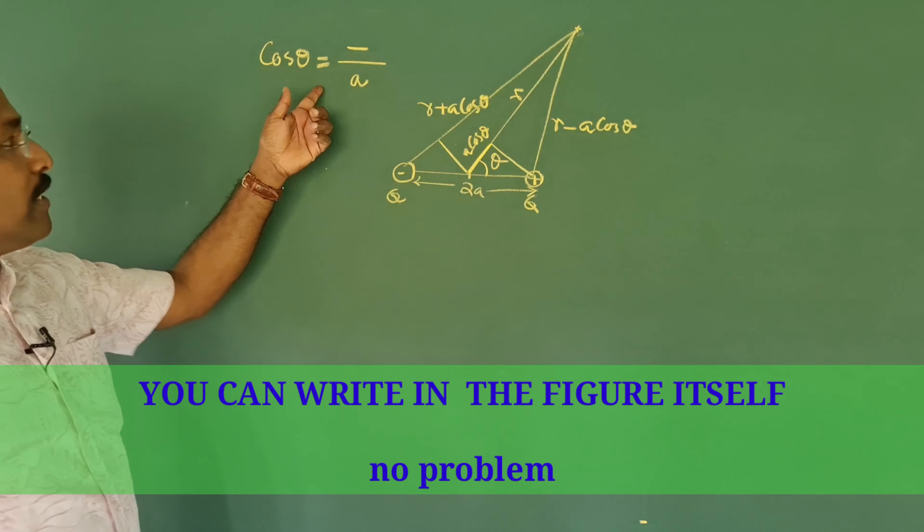What remains after taking the common factor is a single fraction whose LCM in the denominator is r² − a²·cos²θ, using the identity (a−b)(a+b) = a²−b². The numerator simplifies to (r + a·cosθ) − (r − a·cosθ) = 2a·cosθ.